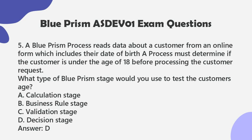Question 5: A Blue Prism process reads data about a customer from an online form which includes their date of birth. A process must determine if the customer is under the age of 18 before processing the customer request. What type of Blue Prism stage would you use to test the customer's age? a. Calculation stage. b. Business rule stage. c. Validation stage. d. Decision stage. Answer: D.